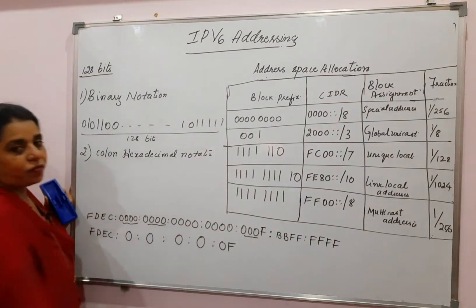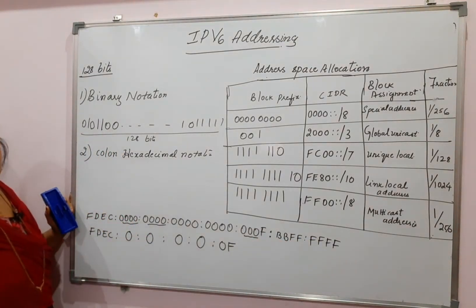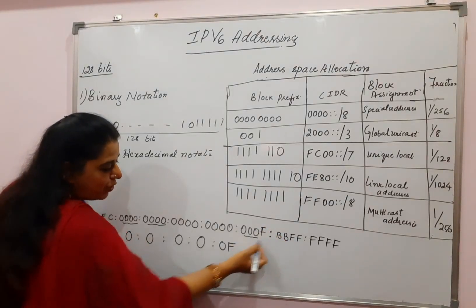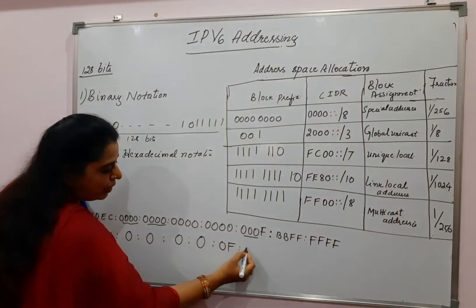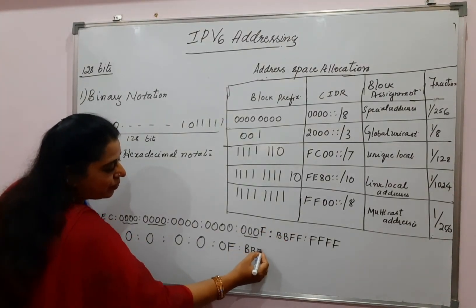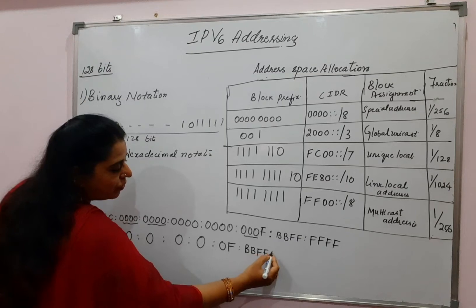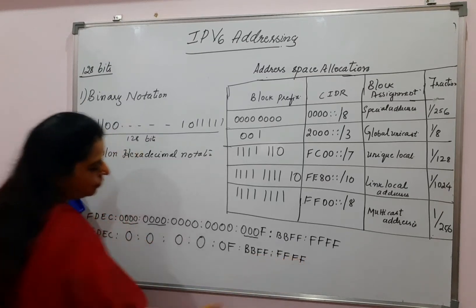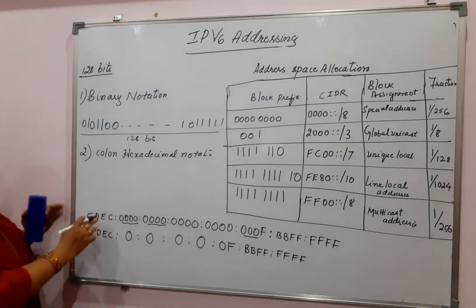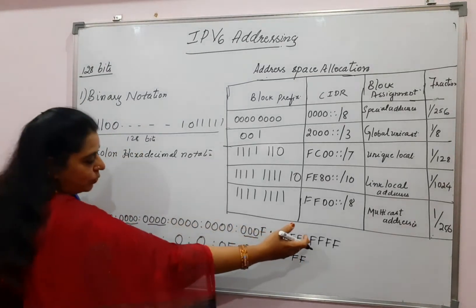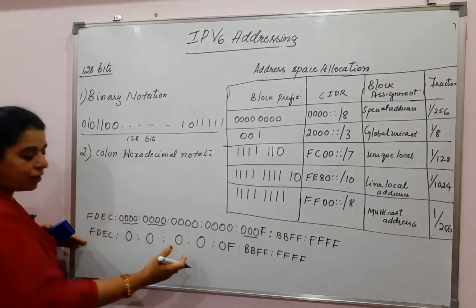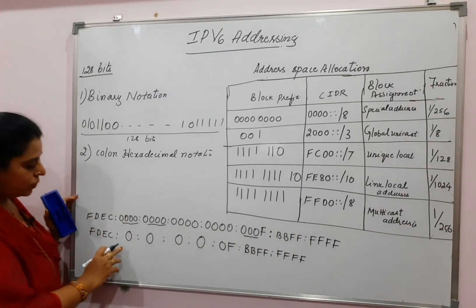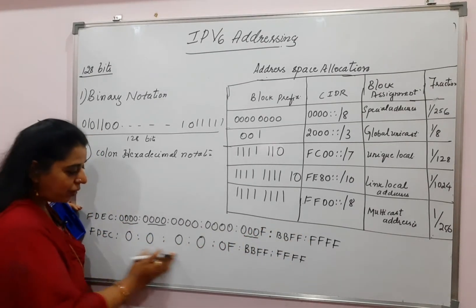For sections like 'ffff', you cannot compress further — do not make the mistake of writing a single value. It must remain 'ffff'. So a huge number can be reduced significantly using this compression technique.